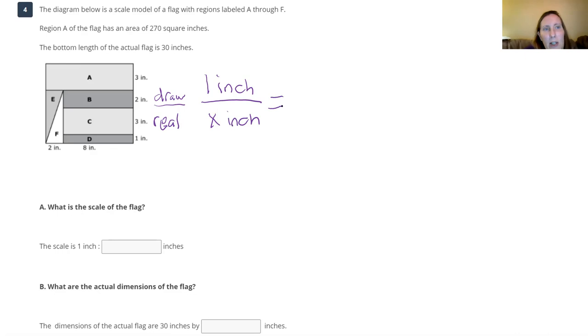They're telling us that the bottom length of the actual flag is 30 inches. In the drawing, how big is the actual flag? It's two inches, the bottom of the triangle part, and then it's eight inches, this piece here. So all together, it's 10 inches.